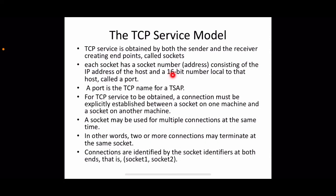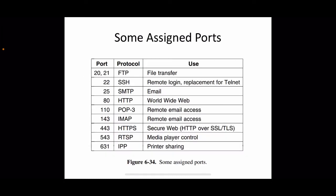Port numbers are 16-bit numbers local to a particular host that identify a particular application process. A set of port numbers are reserved for standard services — for example, ports 20 and 21 are reserved for FTP, port 22 for Secure Shell (SSH) used for remote login, and port 25 for SMTP mail service. These reserved port numbers cannot be assigned to user processes.